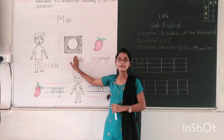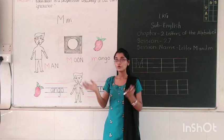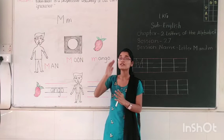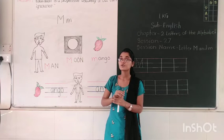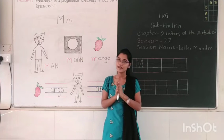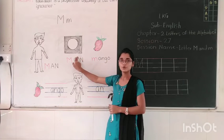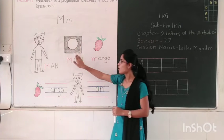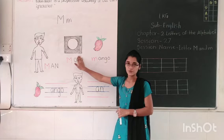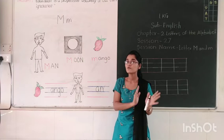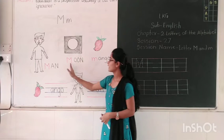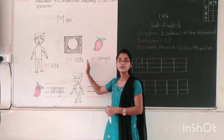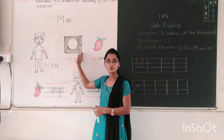Now next, this is moon. We see moon in the sky during the night time. So this is moon. The answer is m, and M for moon also. And what is the spelling of moon? M-O-O-N, moon.